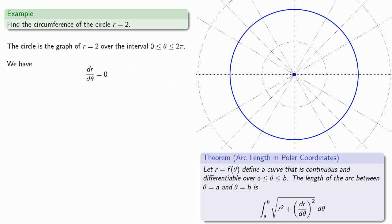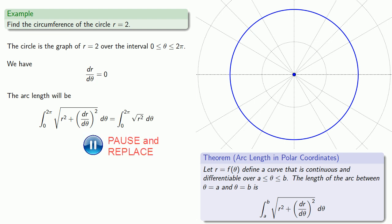And so we'll substitute that into our arc length formula. Our differential variable is θ, so we have to get rid of r. Evaluate our integral.